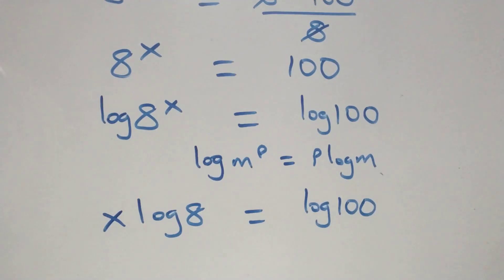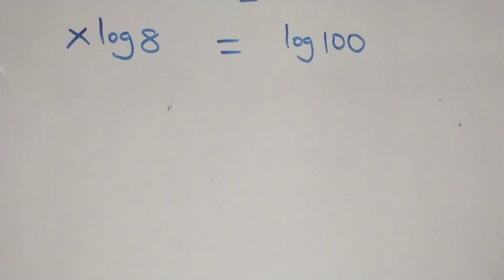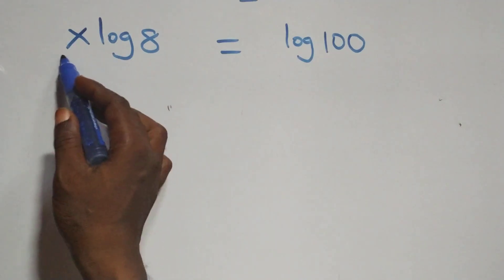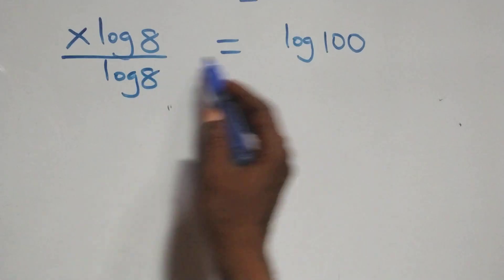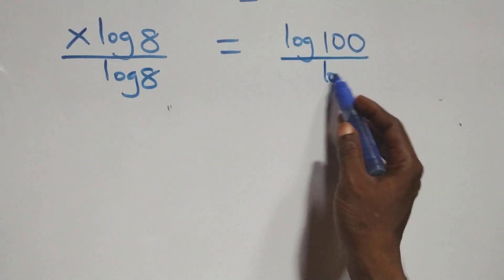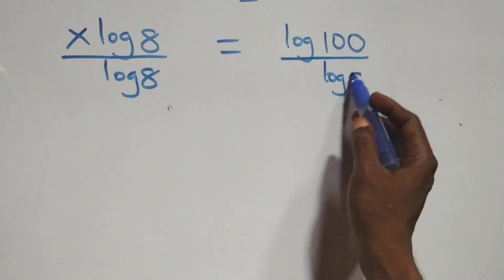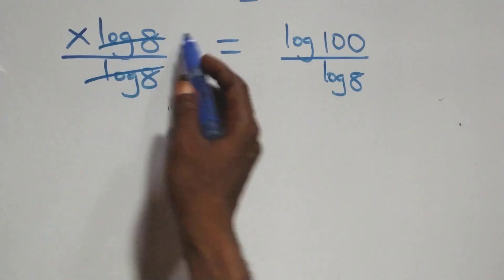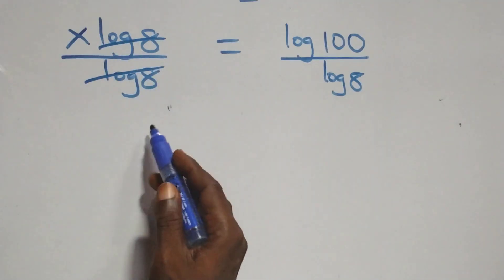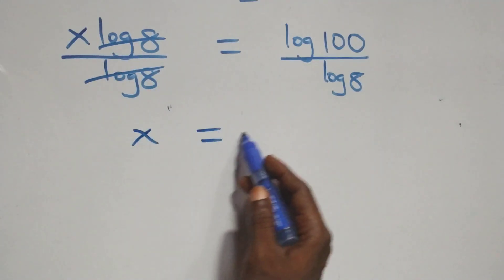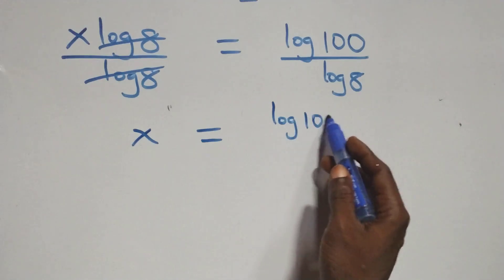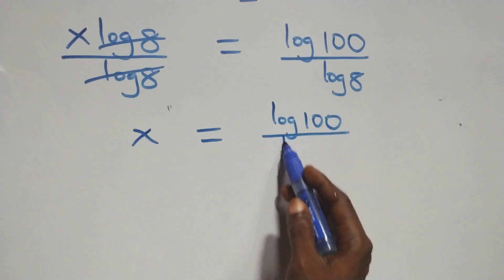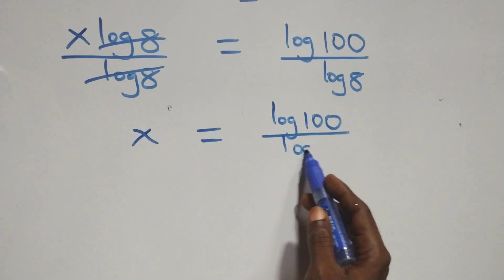From here, the next step: we divide both sides by log 8. Log 8 cancels with each other, and we have x equals log 100 over log 8.